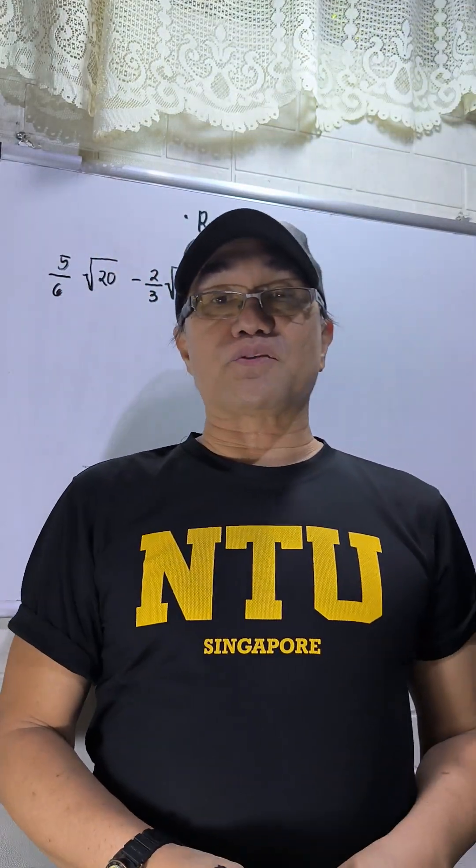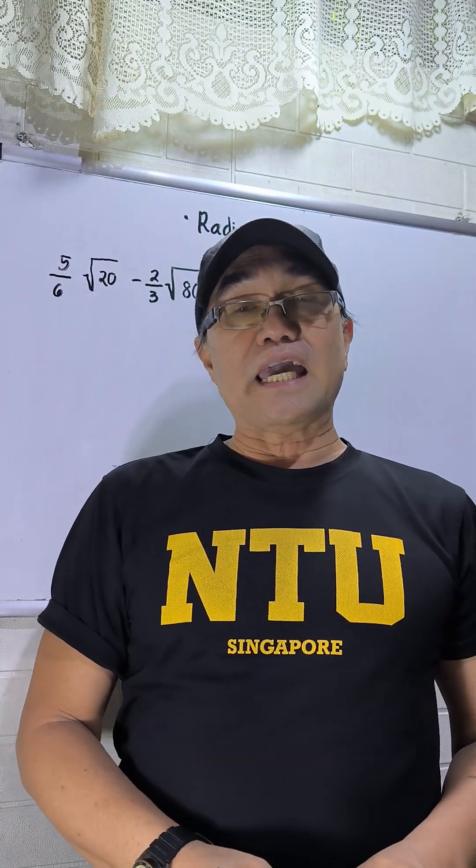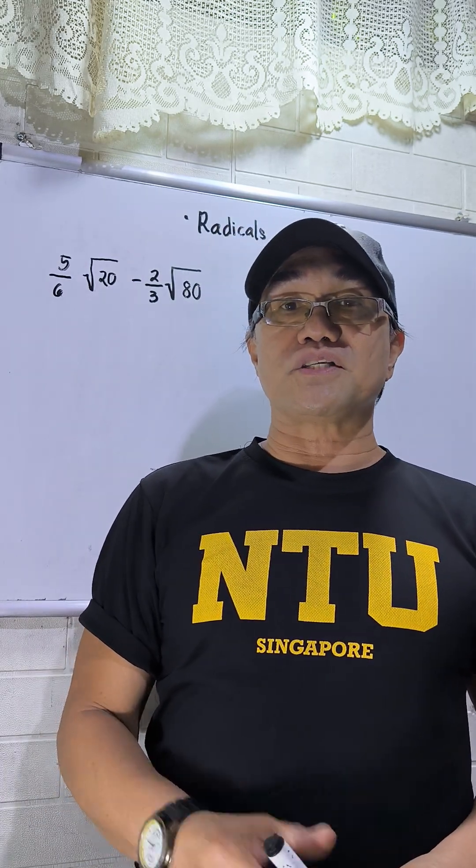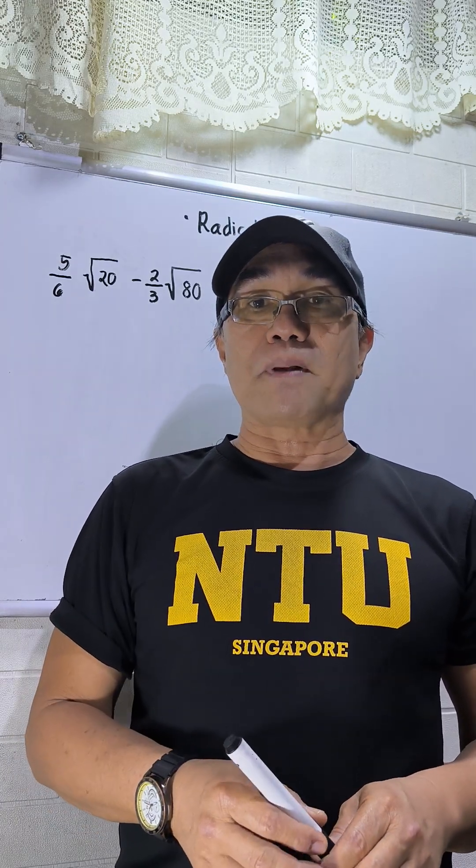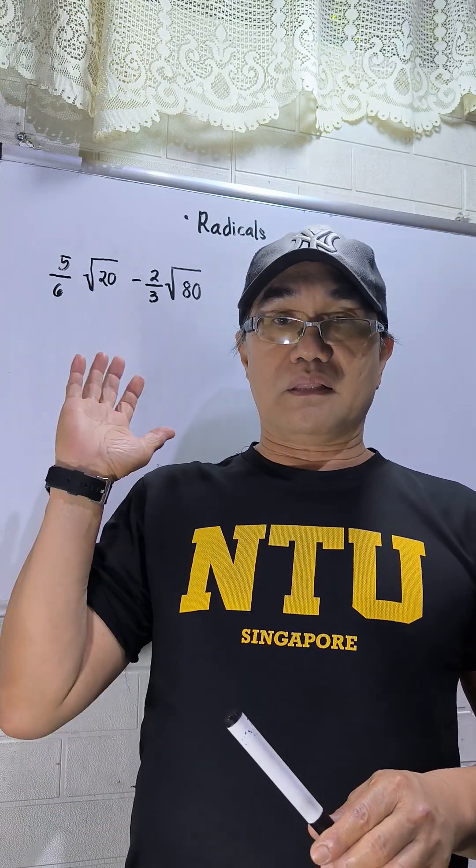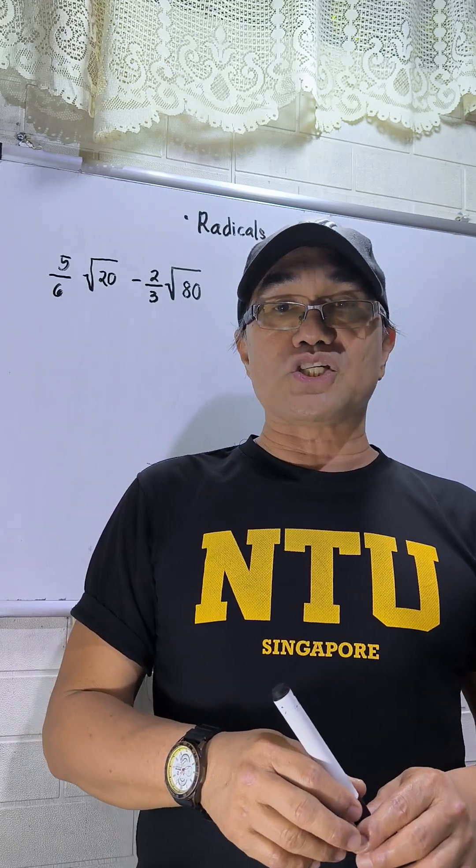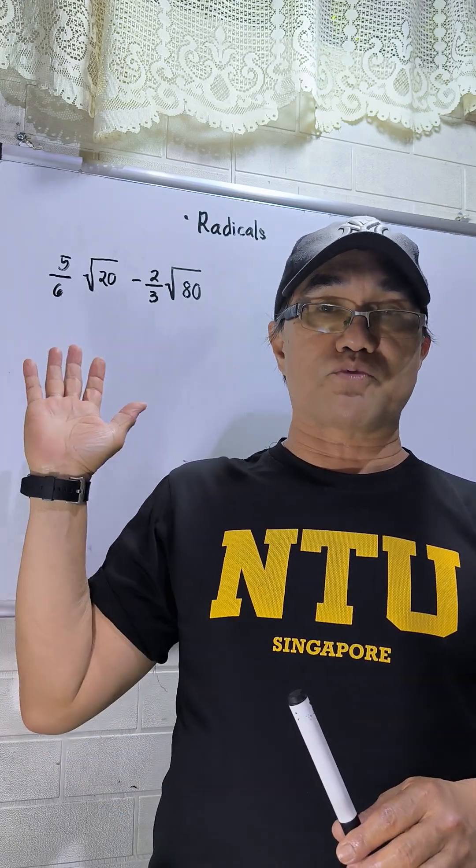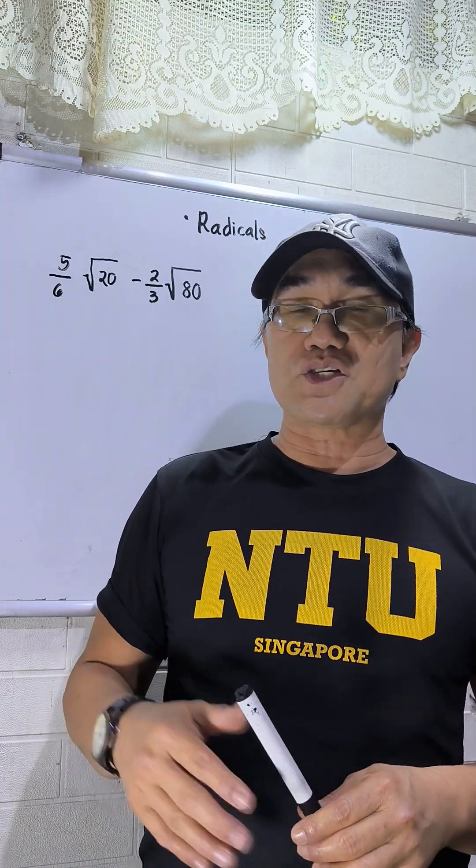Hello to everyone, especially to the students who enrolled in BS Education major in Math and junior high students. This is your topic in algebra. This is actually simplifying radicals, but as we notice here on the board, we have an operation of subtraction, so meaning this is subtraction of radicals. I will start my detailed explanation about this topic.